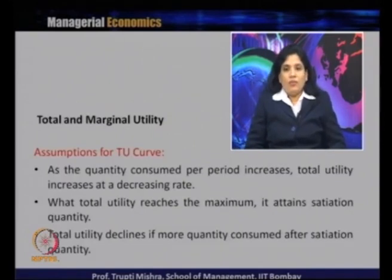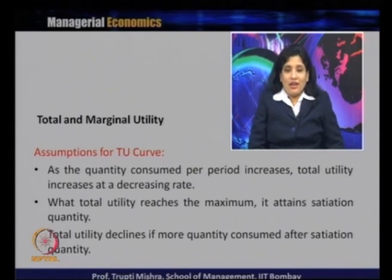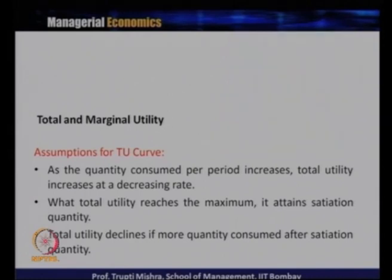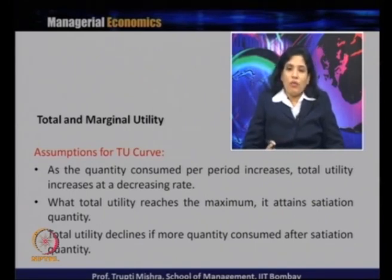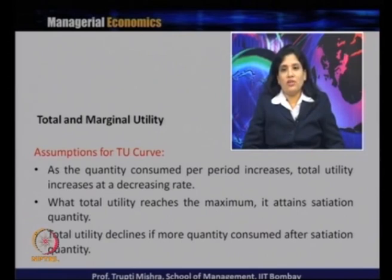The assumptions of the total utility curve are: as quantity consumed increases, total utility increases at a decreasing rate. When total utility reaches its maximum, it attains the satiation quantity — the threshold level up to which the consumer gets satisfaction. Total utility then declines if more quantity is consumed beyond the satiation quantity.